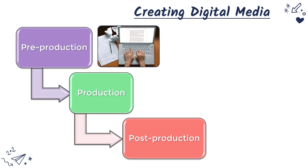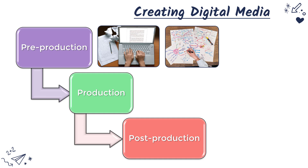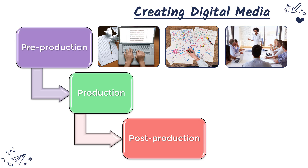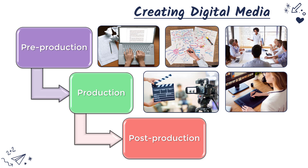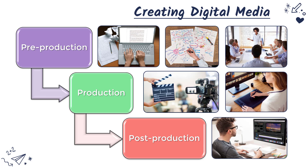What actually happens in these stages is specific to the media product you're making. In pre-production you might be writing or editing a script if you're making an advert or a film, sketching out ideas maybe with a mind map, having meetings with your client, pitching your ideas to them, or even pitching to investors to get money to fund production. In production, where you actually make the product, you might be filming your advert or digital skit, recording a podcast, or if it's digital art, using graphic design software to actually draw the artwork.